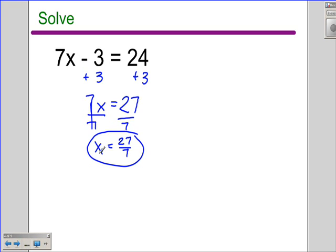And just a reminder from last lesson, we always want to write so that our variable equals. We don't want to write 27 over 7 equals x. We're not interested in what 27 over 7 is. We know that that's 27 over 7. We want to know what the variable x is.